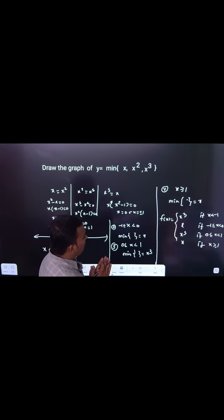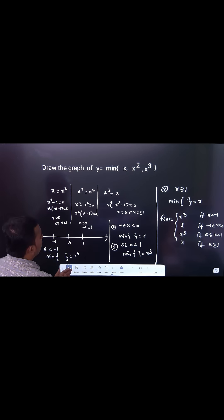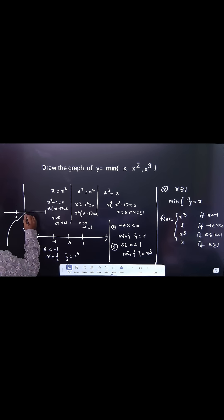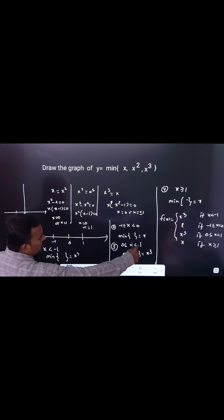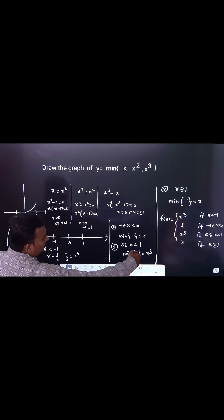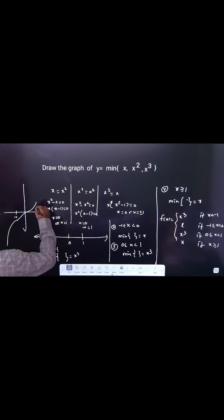How to draw the graph of this? You can see when you take x less than minus 1, here is minus 1, the graph is like this. When you take minus 1 to 0, y is equal to x. Then 0 to 1 again x cube, and then more than 1 it is x again. This is your graph. Clear?